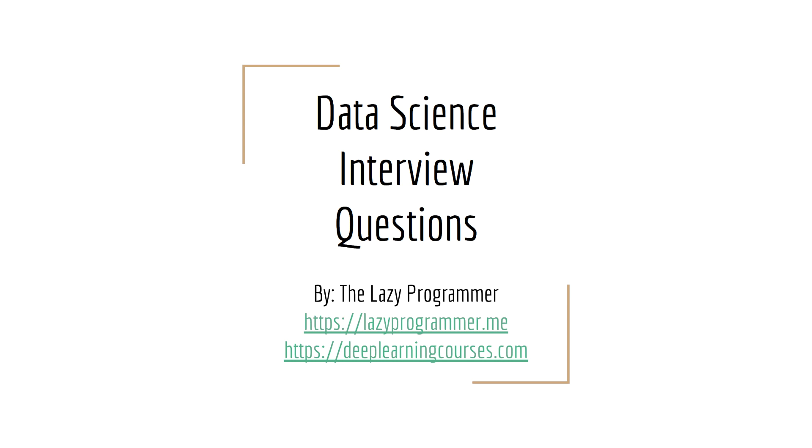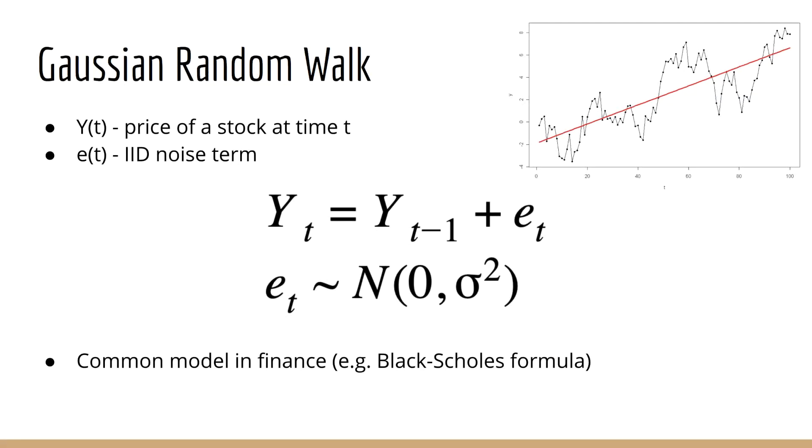First, let's assume we have a Gaussian random walk model which is described by the recurrence you see here. The value of a stock at time t is Y(t) and is equal to its old value Y(t-1) plus a noise term e(t).